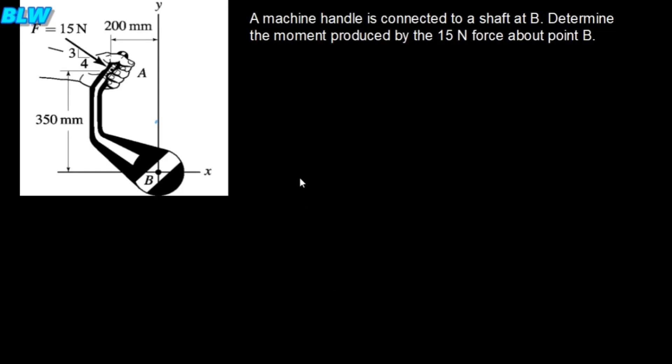In this video, you will answer the question on the screen. The question says that a machine handle is connected to the shaft at B. Determine the moment produced by the 15 Newton force about point B. So you are going to determine the moment produced by this 15 Newton force about point B.